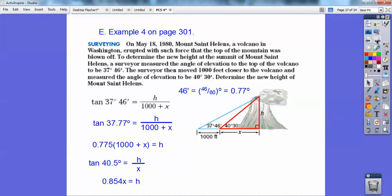So I'm going to go ahead and set those sides equal to each other. I'm going to subtract 0.775x. And I get 0.079x equals 775. So I get x to be about 9,810.